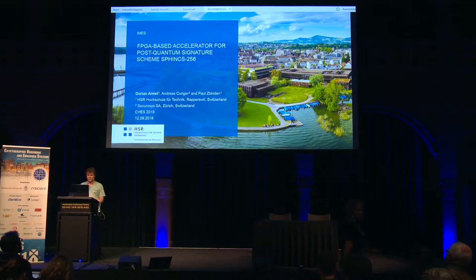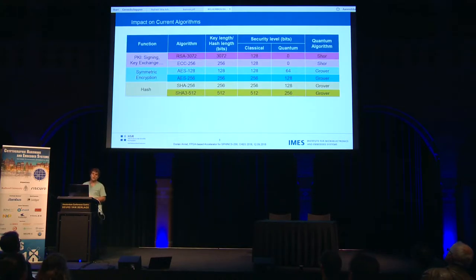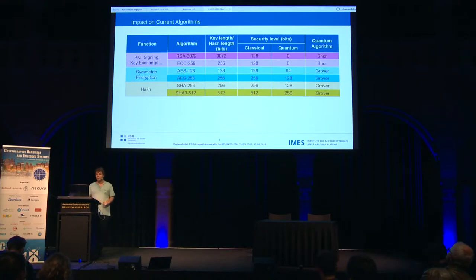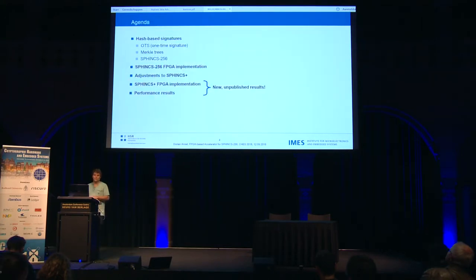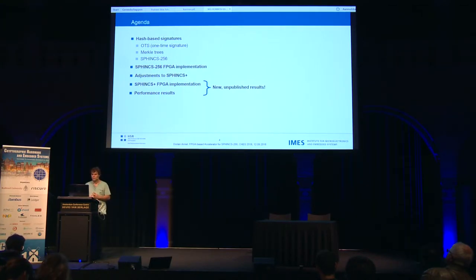Thank you for the introduction and welcome to my talk. We all know that the clock is ticking and as soon as the hardware is big enough and ready, it will break today's public key encryption and signing, which is based on RSA and elliptic curve cryptography. The good thing is that hash functions will stay alive, although they lose a few bits in security. Today I'll make a short introduction about hash-based signatures — this talk is only about signatures — and then show the key ideas of my implementation of SPHINCS-256, and I have some new results about SPHINCS+, which is one of the schemes in the NIST post-quantum competition.